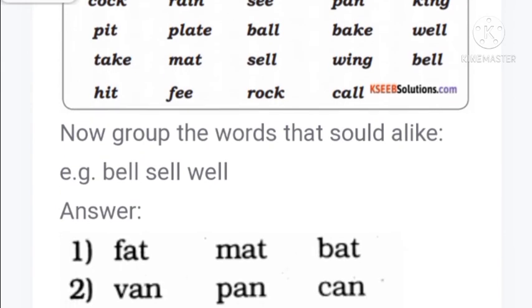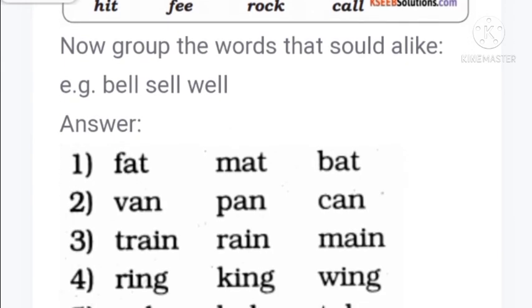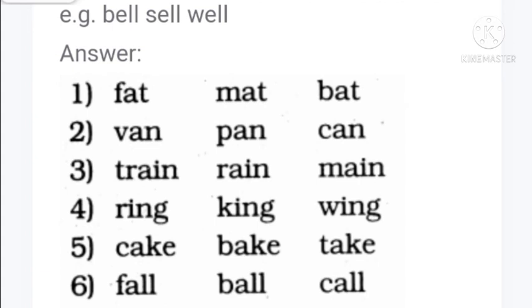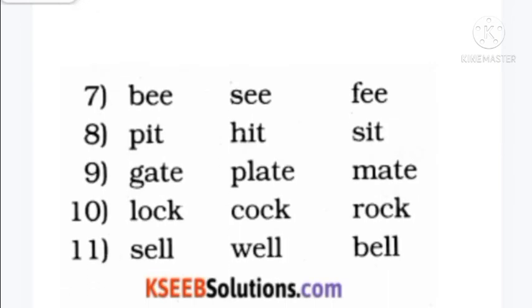Now group the words that sound alike - that means rhyming words. Bell, sell, well. Fat, mat, bat. Van, pan, can. Train, rain, main. King, ring, wing. Cake, bake, take. Fall, ball, call. Bee, see, fee. Pit, hit, set. Gate, plate, mate. Sell, well, bell.